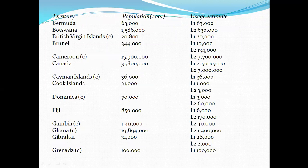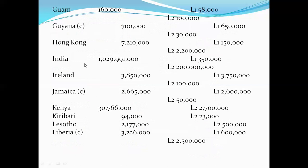In the case of Cameroon, the population ratio is given for 2001 along with the second language user count. Going forward, we see India with its first language user figures. Some countries have both first language and second language users — for example, Hong Kong has both first and second language users, and Ireland also has both first and second language users.